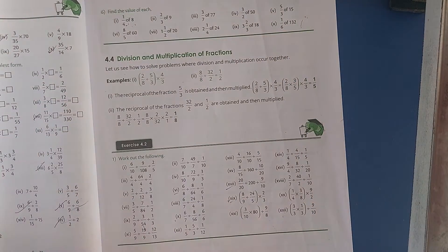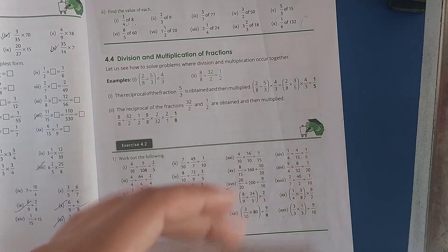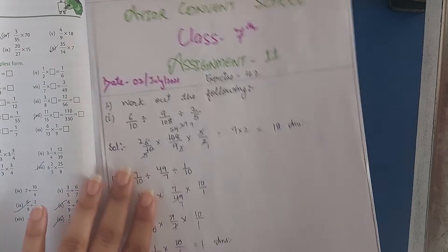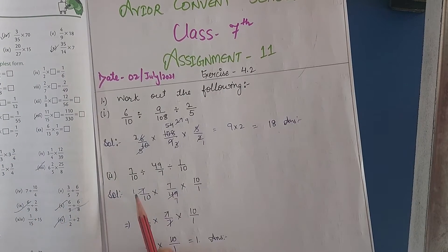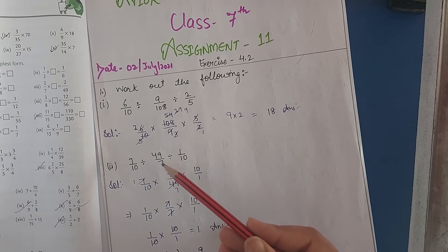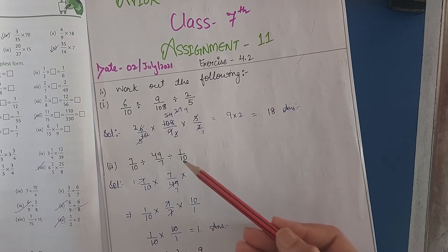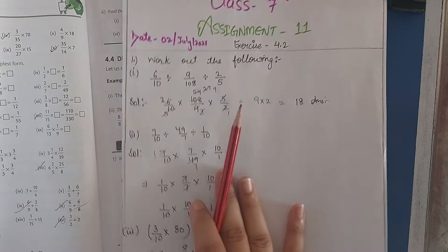So I have done so many questions. These are in your assignment. Let me show you some of the questions. One question is: 7/10 divided by 49/7, then divided by 1/10.